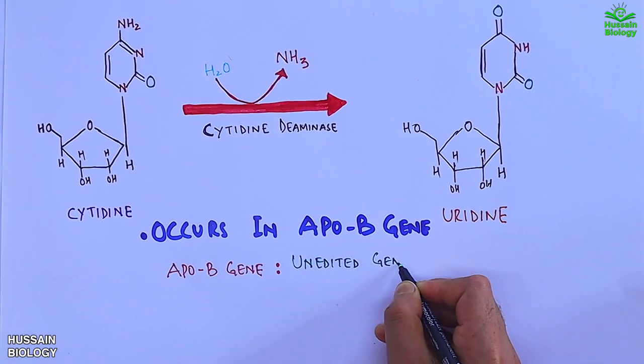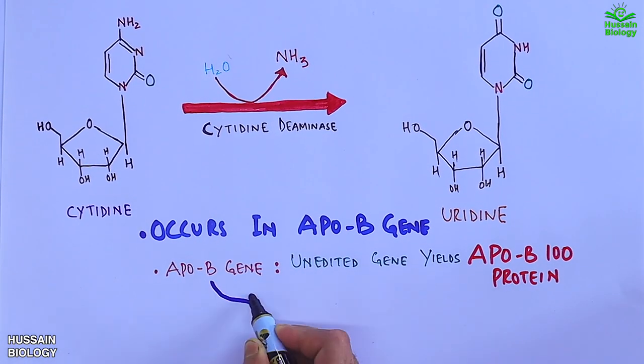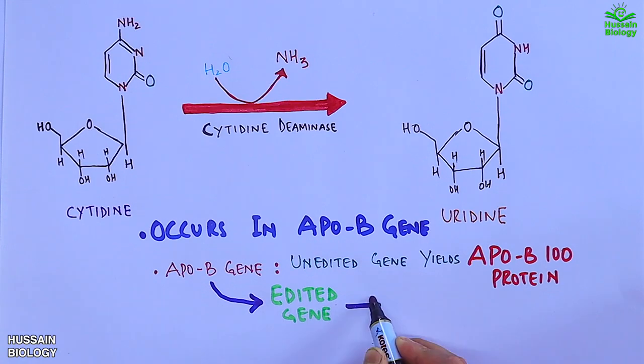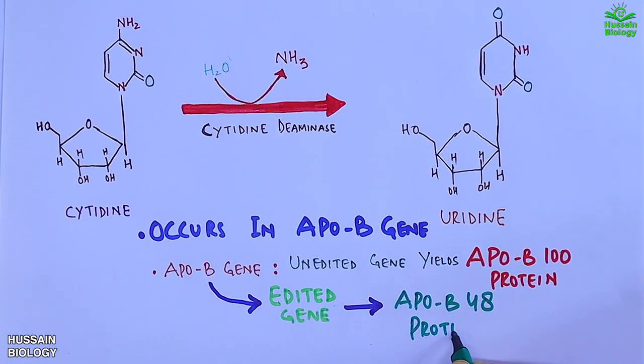The unedited apoB gene yields apoB 100 protein, whereas the edited apoB gene yields the apoB 48 protein. Now let's see the mechanism.